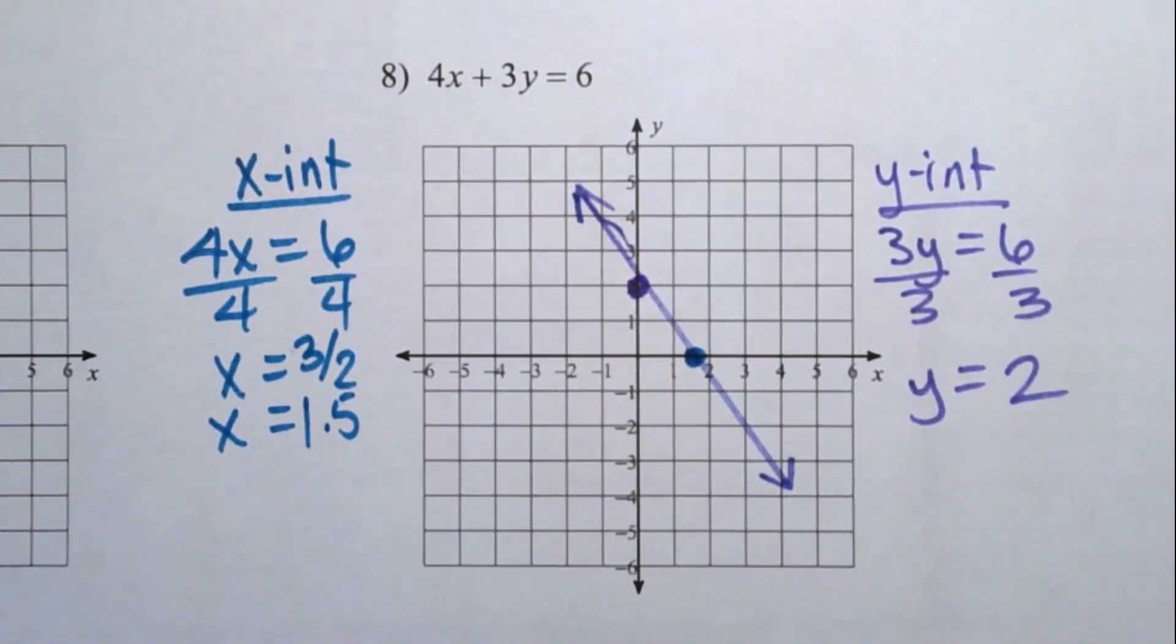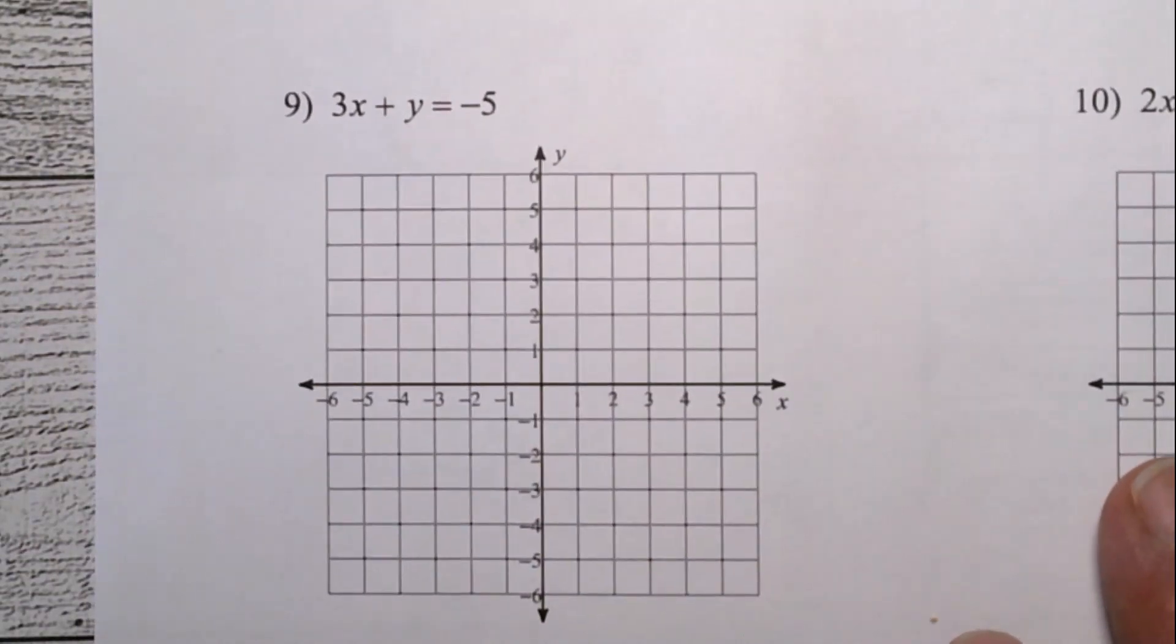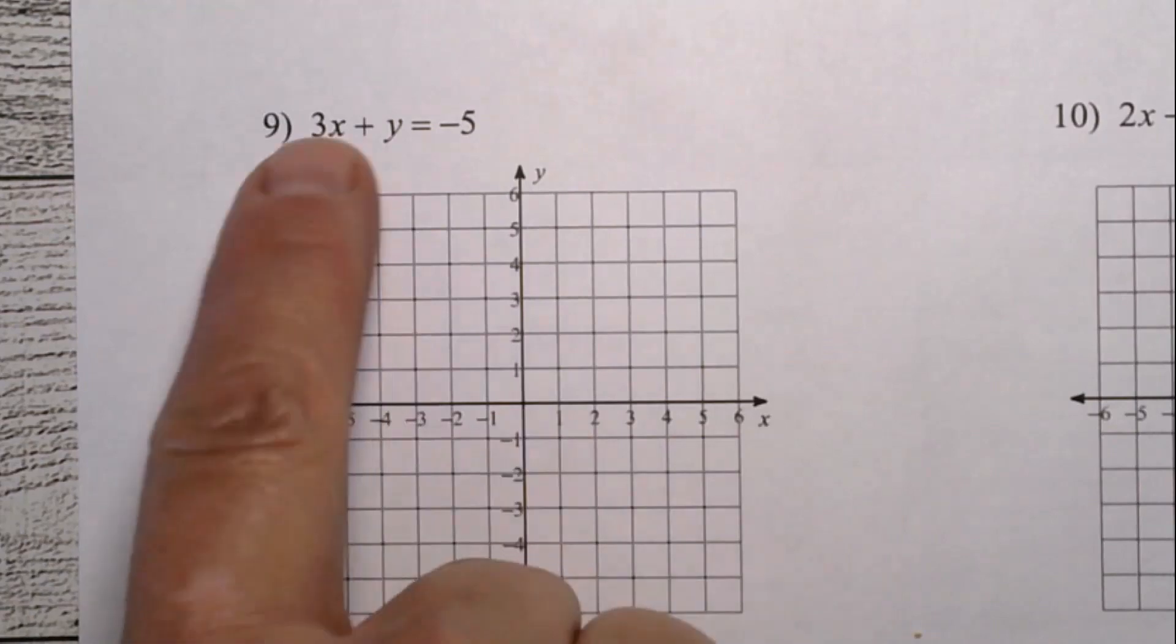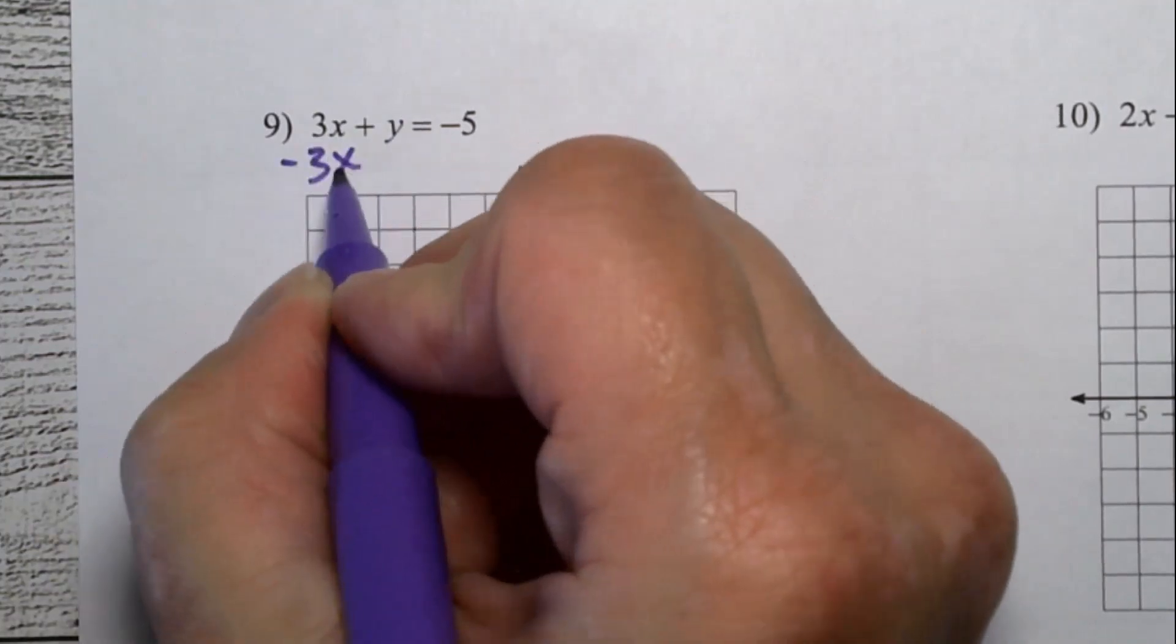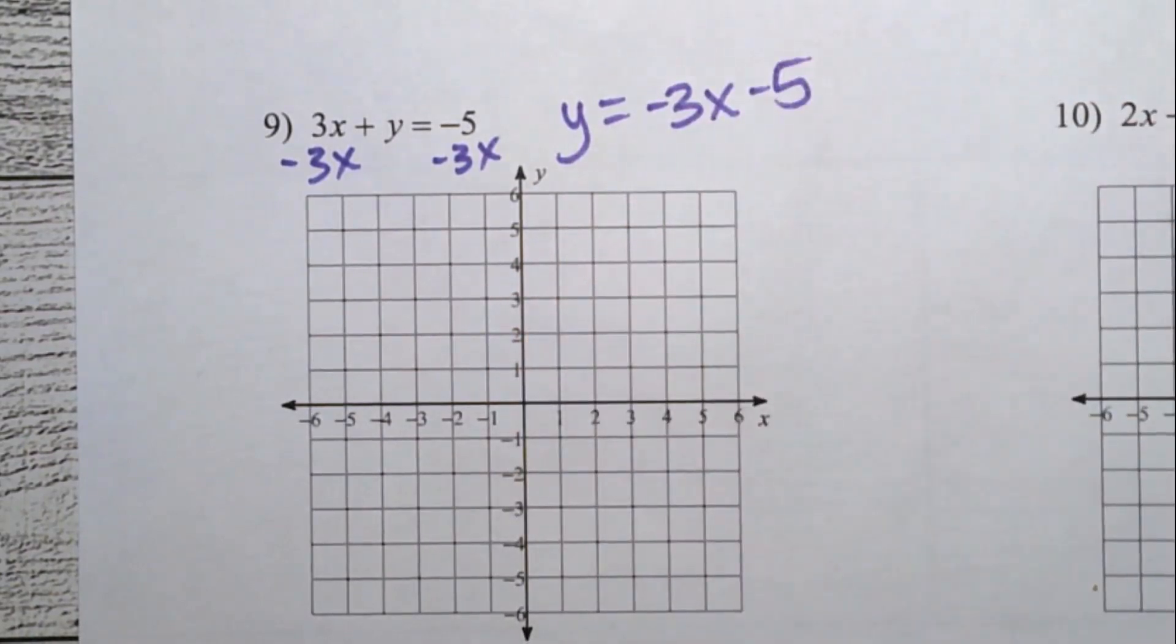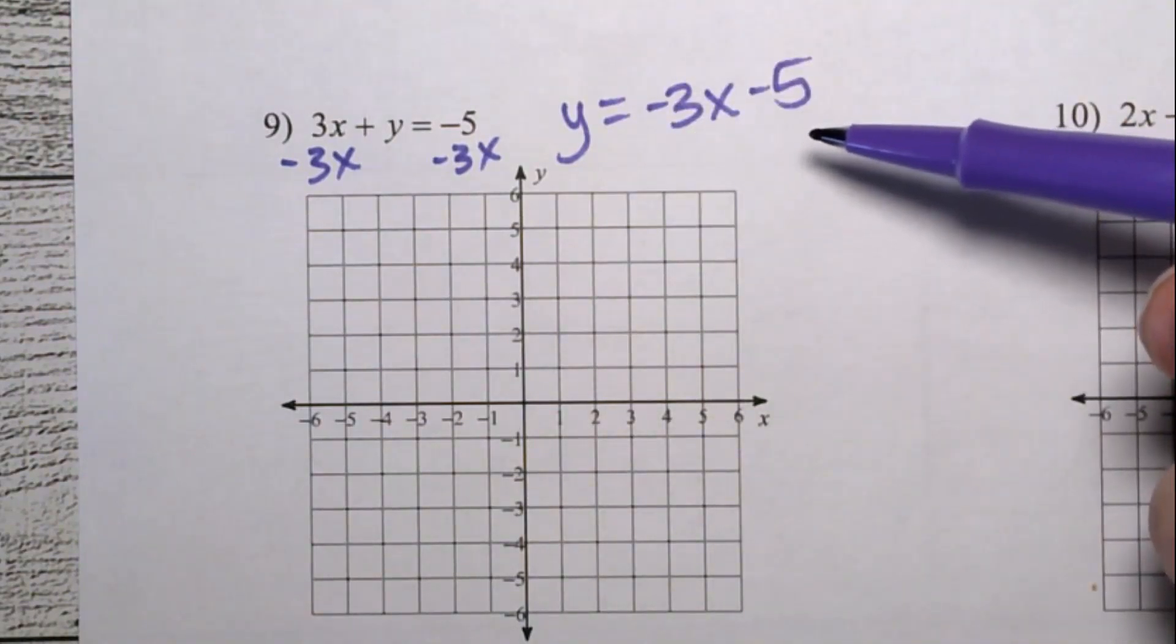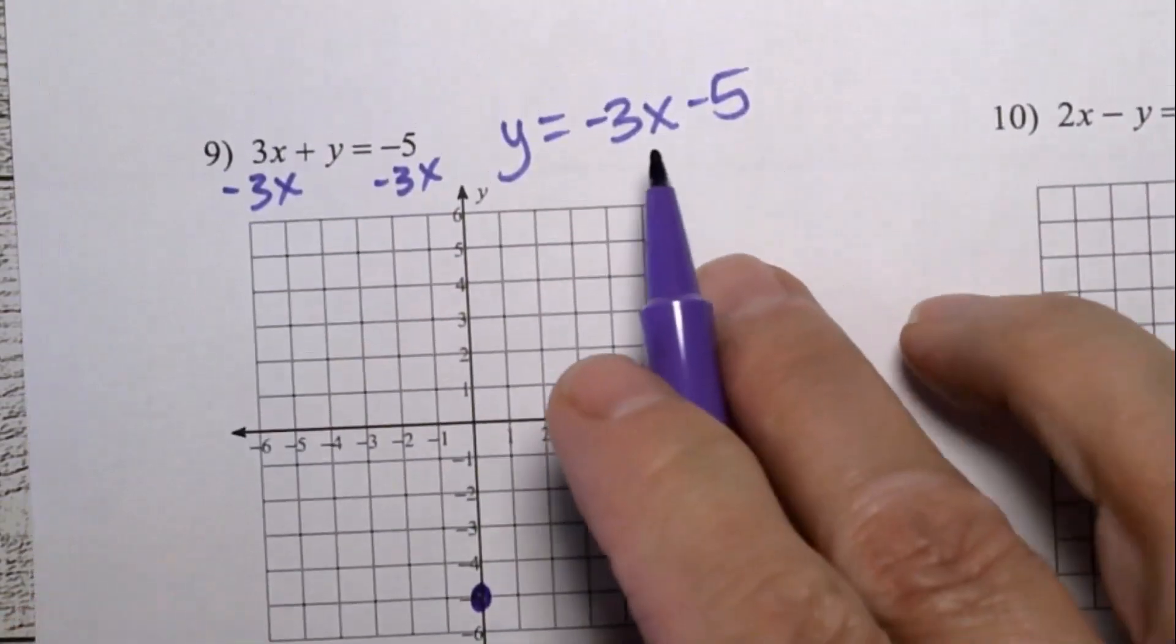All right, number nine. We're working with the intercepts again. And on any of these, you really could just solve for y and turn this into slope-intercept form, if you would like to do that. For this one, that would also be pretty easy. I'll do it that way right now. I kind of like intercepts more, and I think my kids are probably going to do intercepts instead. But this one just says plus y. So what would happen if we subtracted 3x from both sides? You'd get y equals negative 3x minus 5. You might like that more on this one. It's up to you. So I know that the slope is negative 3, and the y-intercept is negative 5.